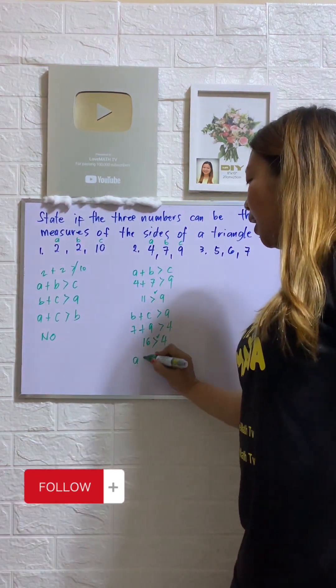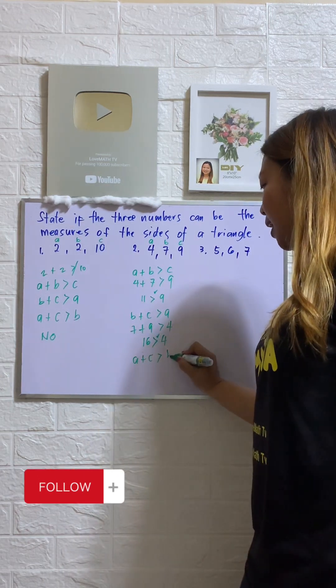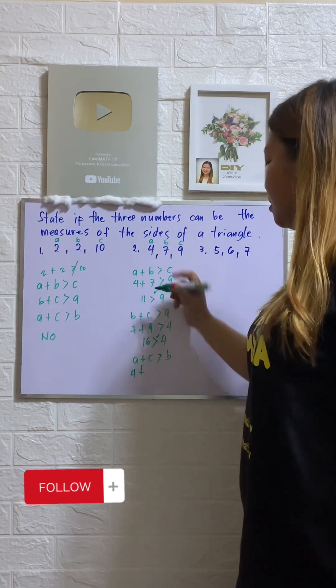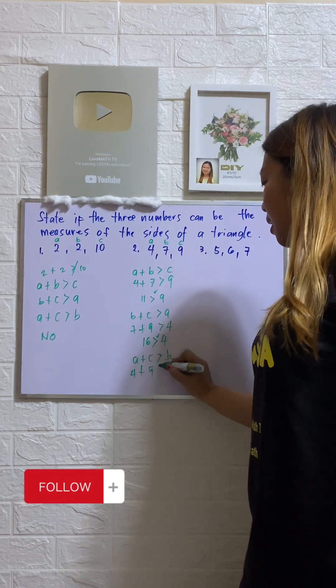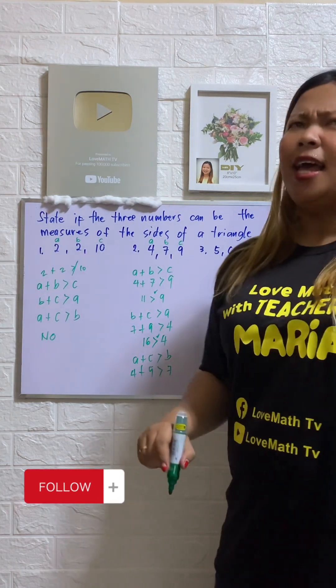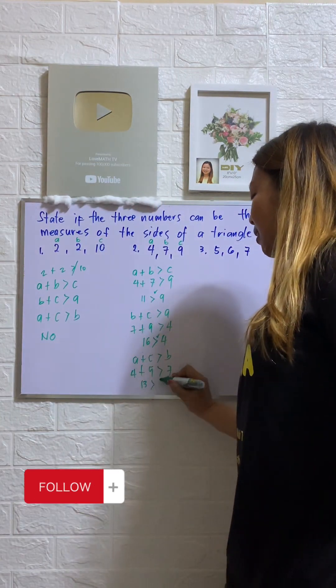How about the third condition? A plus C is greater than B. What is our A? 4 plus our C is 9. Is that greater than B, which is 7? Well, let's try. 4 plus 9, that is? Correct, 13. Is 13 greater than 7? Yes.